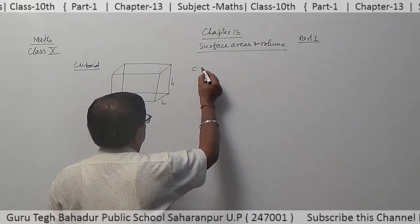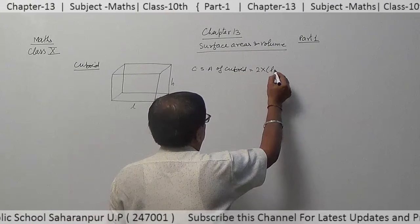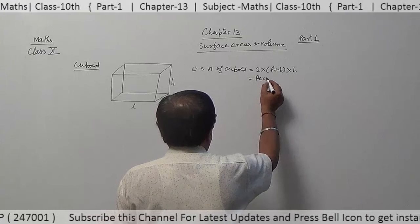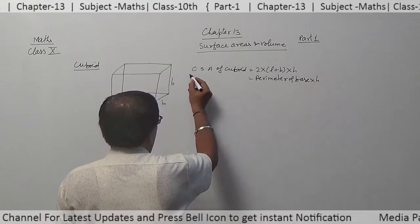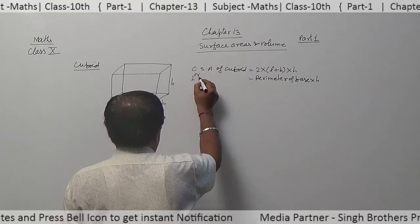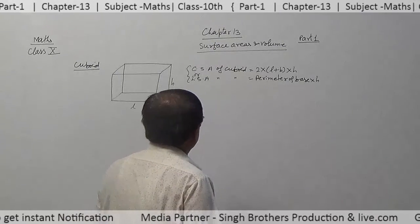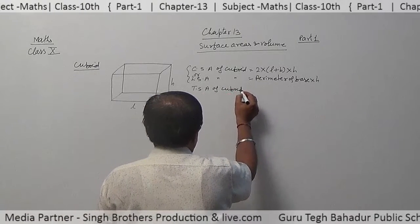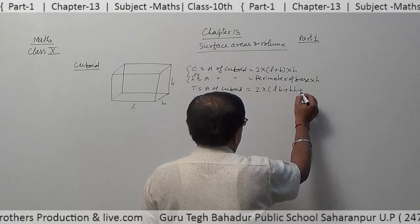Curved surface area of cuboid is 2 into (length plus breadth) into height, or you can write perimeter of base into height. It is also written as lateral surface area of cuboid — that is the same thing. Total surface area of cuboid is 2 into (LB plus BH plus HL).